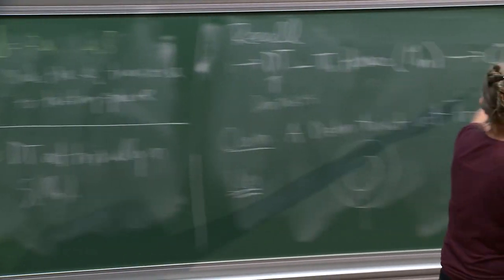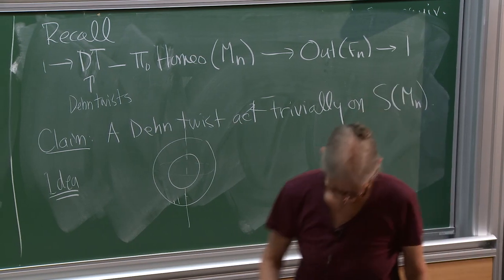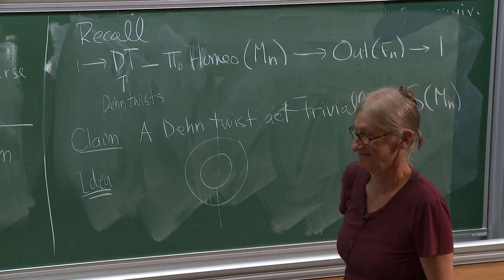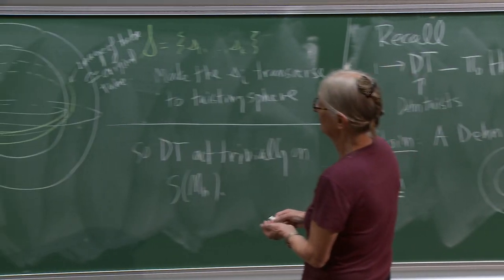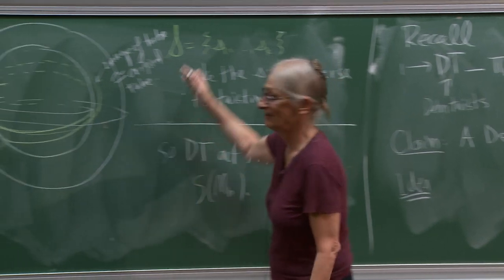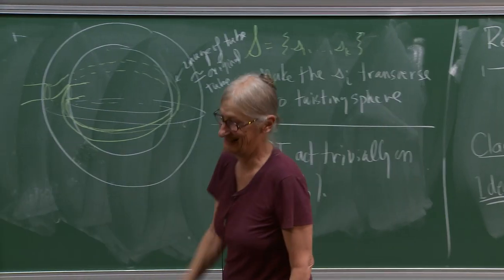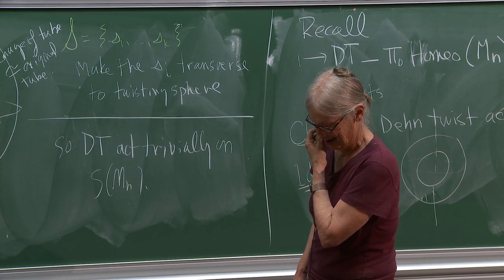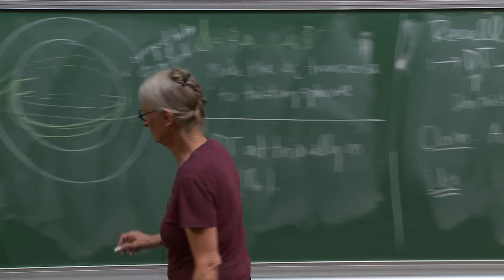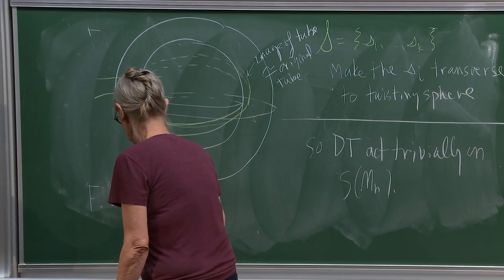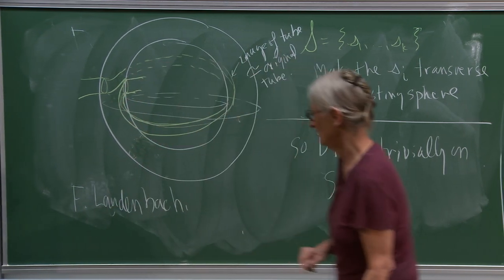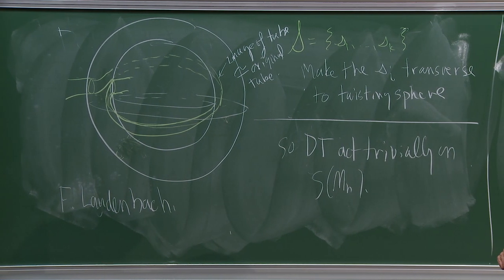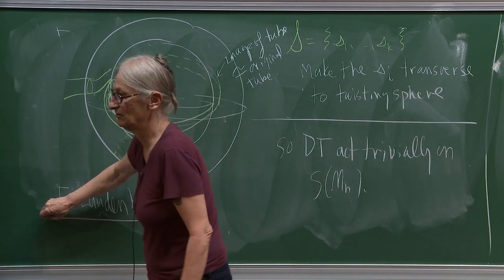I can see if the tube only passes through once why that's true — but if it passes through multiple times, how do you know they don't get knotted? Yeah, it gets more complicated. These are basic ideas that go back to François Laudenbach, who proved lots of nice things about spheres in three-manifolds. If you're interested, I recommend going back and looking at his papers.